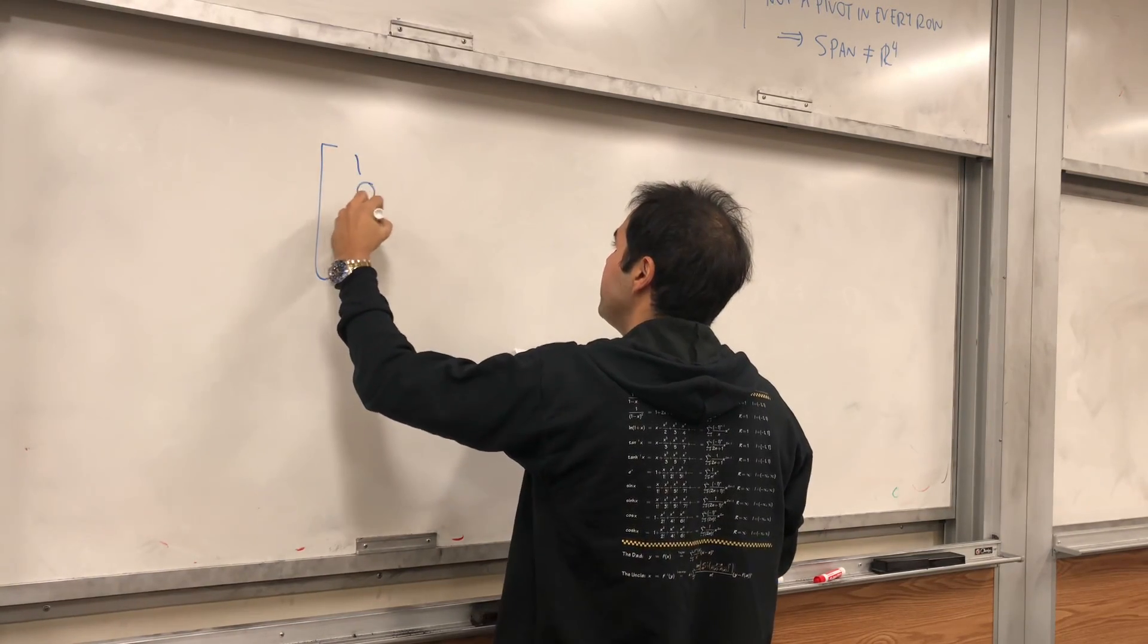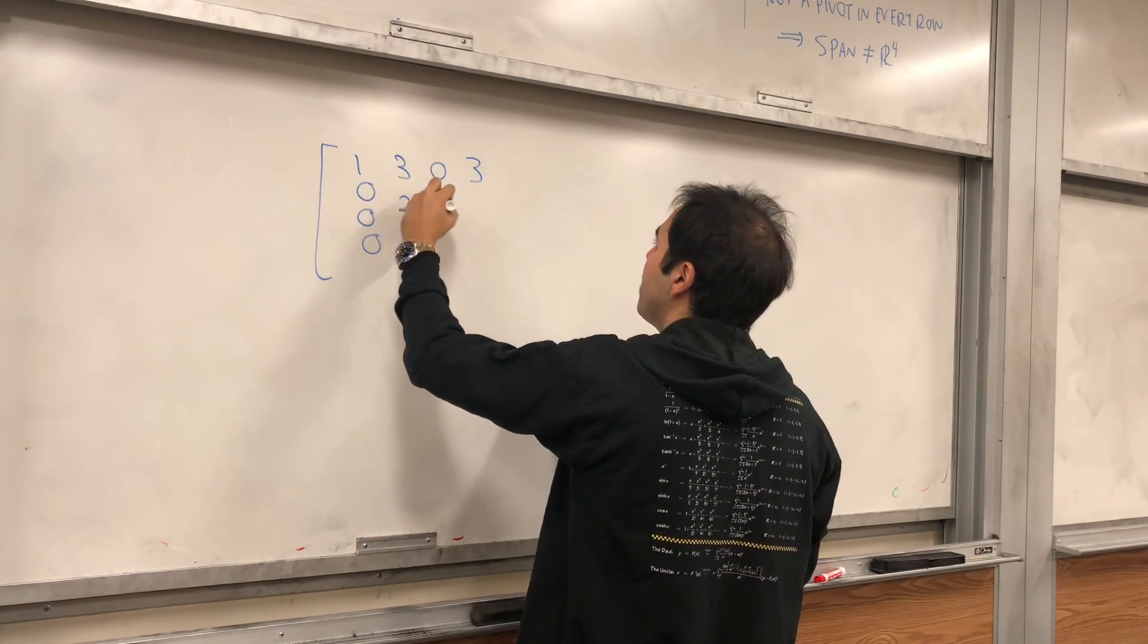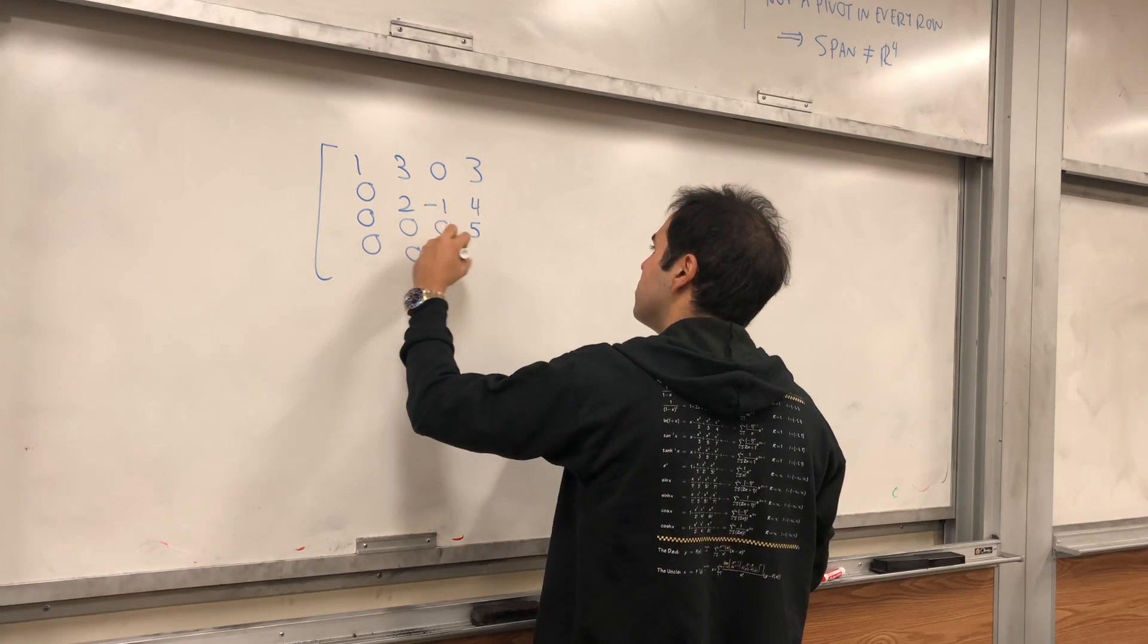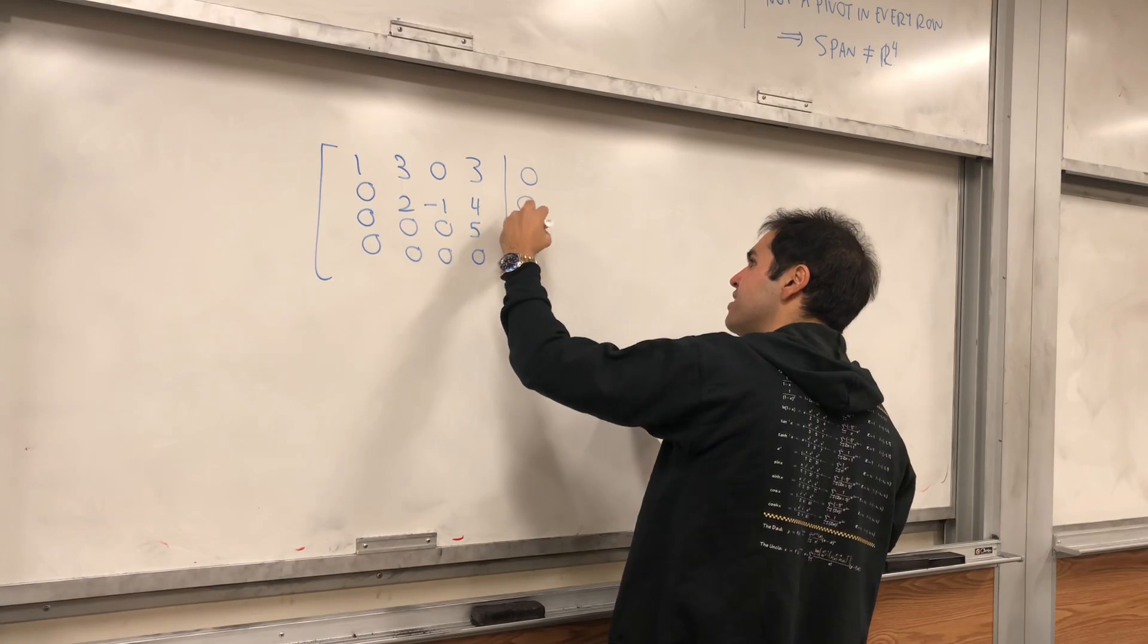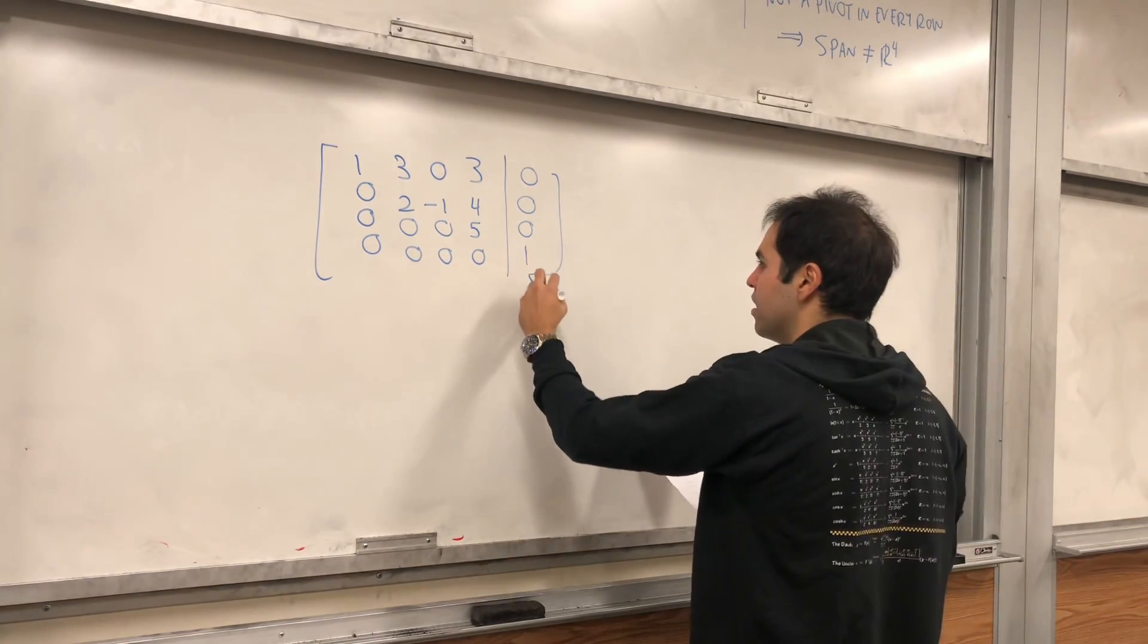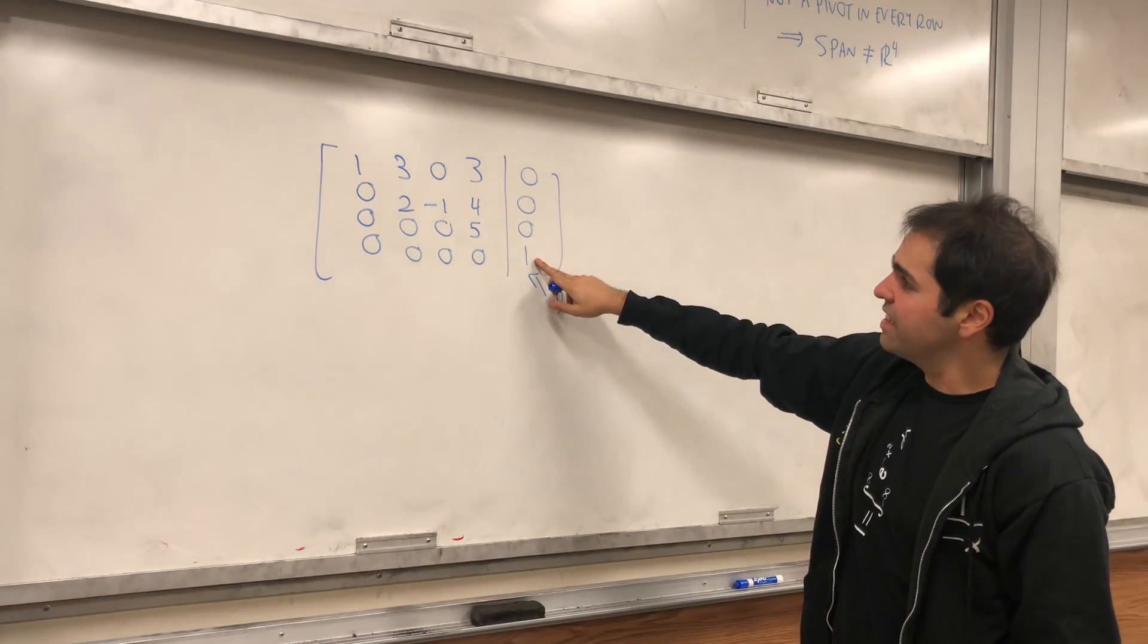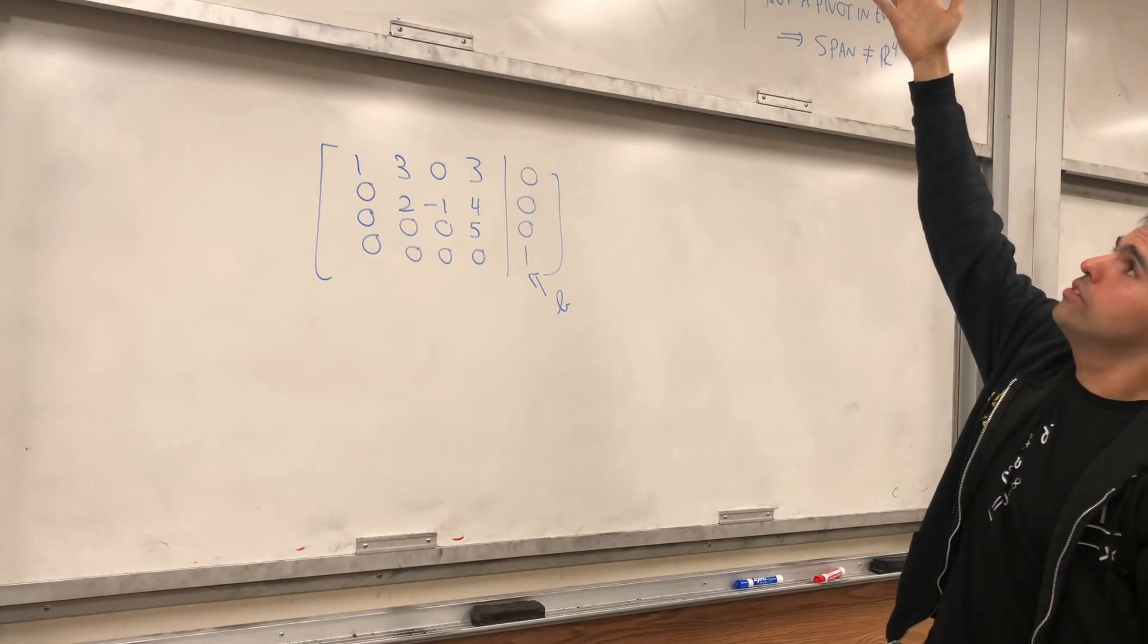And then, basically, you can just define b to be the following, one, again, one, three, zero, three, two, minus one, four, zero, zero, five, zero, zero, zero, zero, and you can just define b to be, let's say, zero, zero, zero, one.